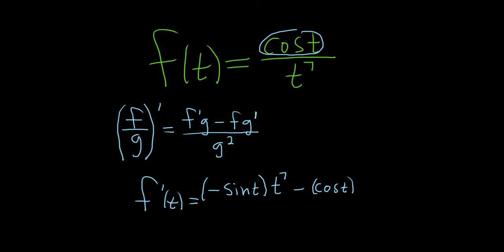I'll put this in parentheses again, times the derivative of the bottom, which using the power rule, you bring down the 7, and you get 7t to the 6. It's all divided by the bottom one squared, so t to the 7 to the 2.